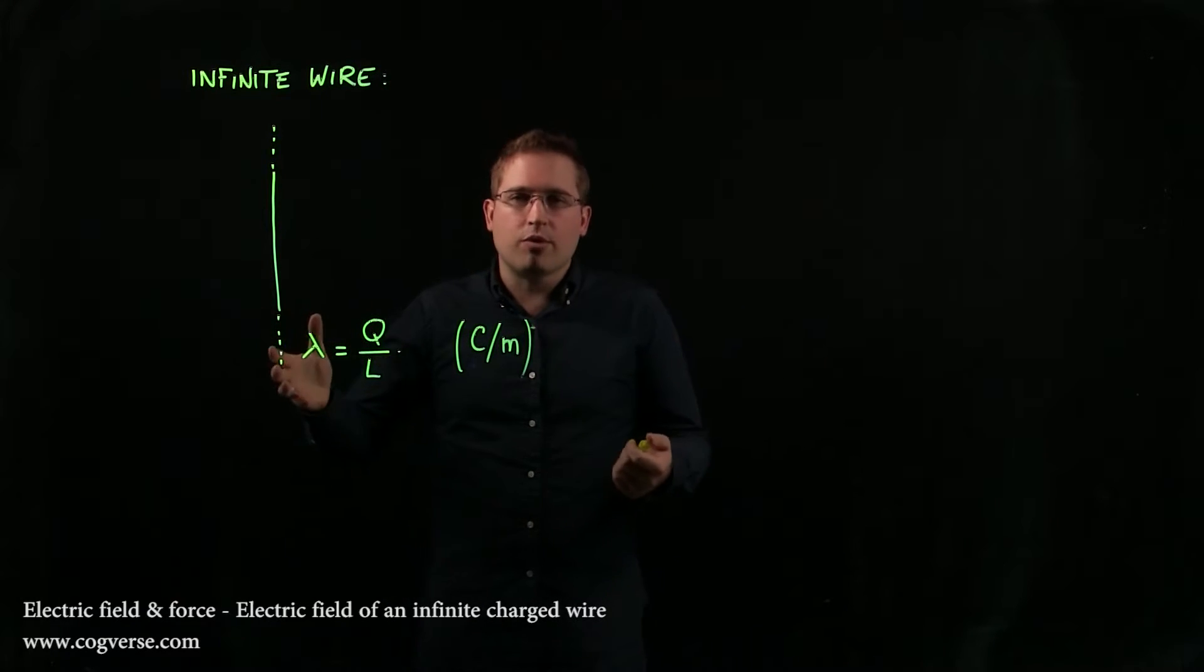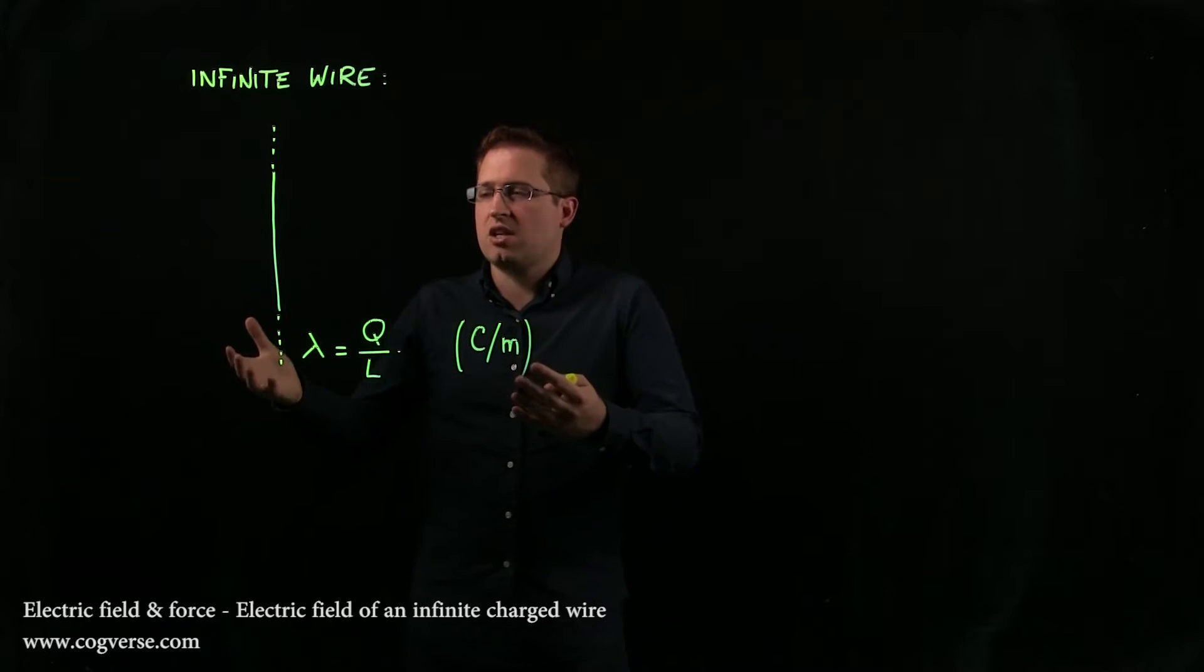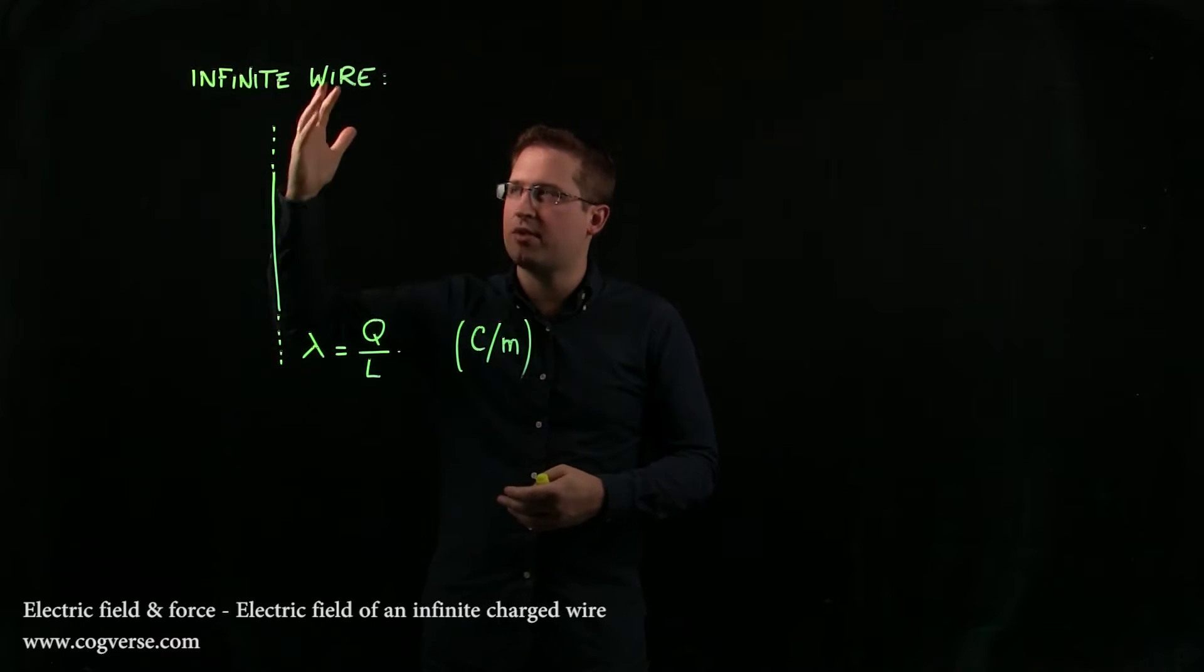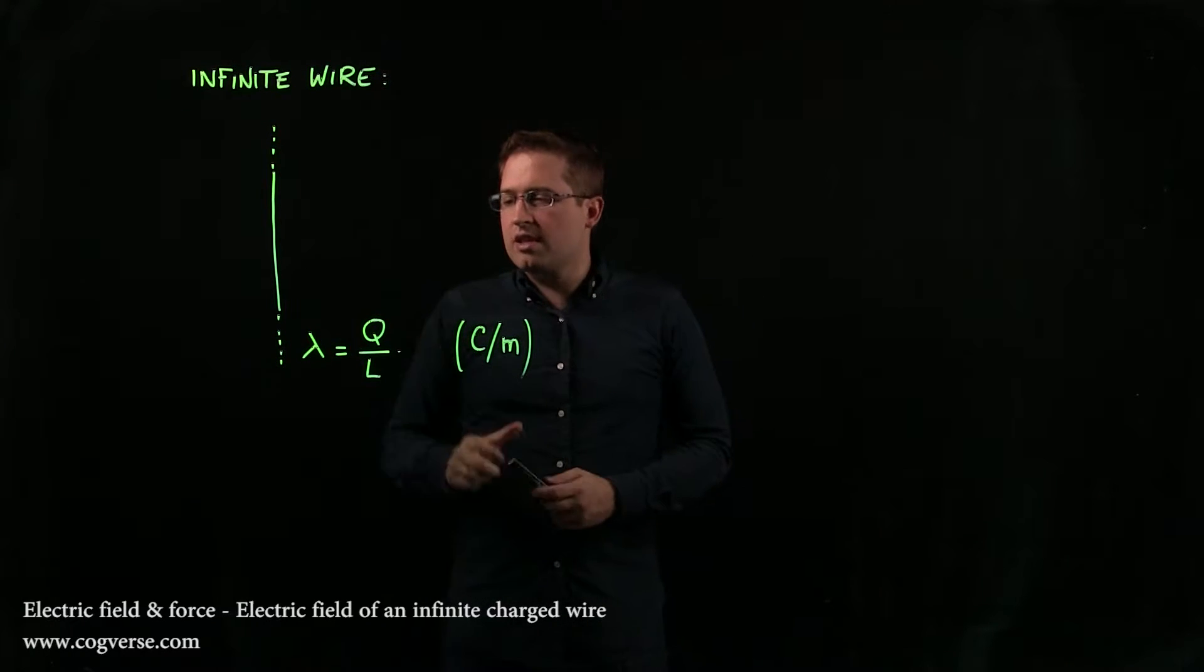Let's say we have 3 coulomb per meter, right? It means take a meter of wire, you get 3 coulomb. Okay, now that makes sense, and just accept that the wire is really, really long. So, we use lambda.